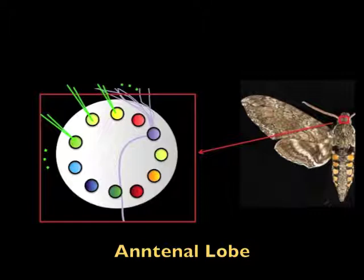Recordings from neurons in the antennal lobe show that it produces a unique pattern of activity per each stimulus. These patterns are termed as neural codes.